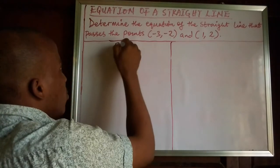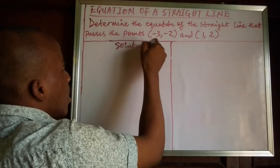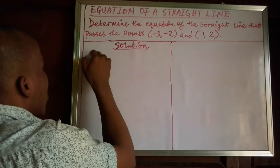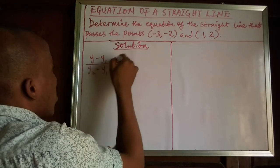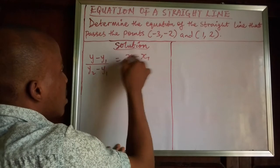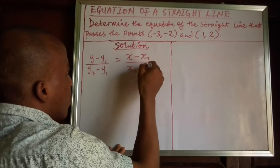So we don't have a gradient, but we can use this formula. We can say it is (y - y1)/(y2 - y1) is equal to (x - x1)/(x2 - x1).